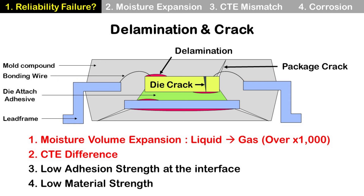Some solutions include using a high moisture resistance mold compound to minimize moisture absorption, or using a low CTE mold compound. Increasing adhesion strength of the mold compound, or increasing the strength of the mold compound, can also be solutions.